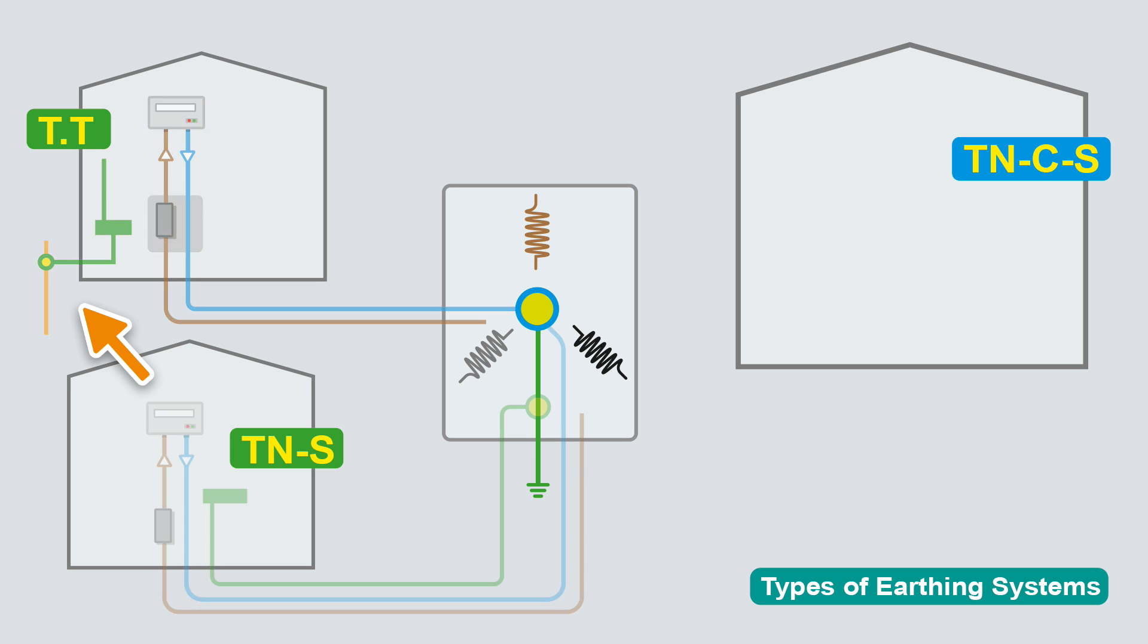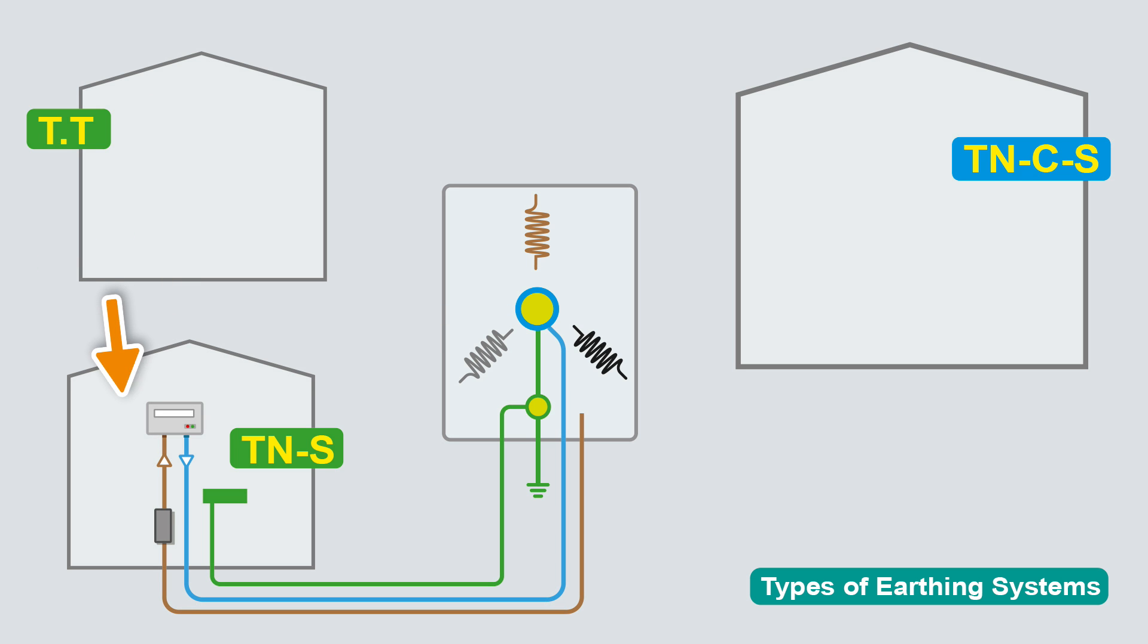With the TNS, the supply company gives you a live and neutral, but they also provide a protective earth as well, which is a separate conductive path, which goes back to the transformer and ultimately connected to the star point along with the neutral. So your neutral and your protective earth are both referenced to earth zero volts.